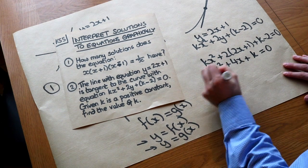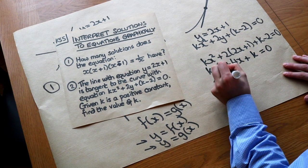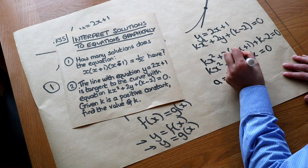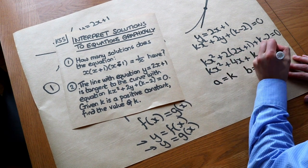So we use a, b, and c. So a is the number in front of the x squared. b is the number in front of the x. c is that constant term.